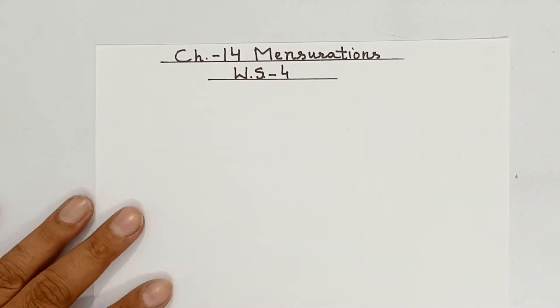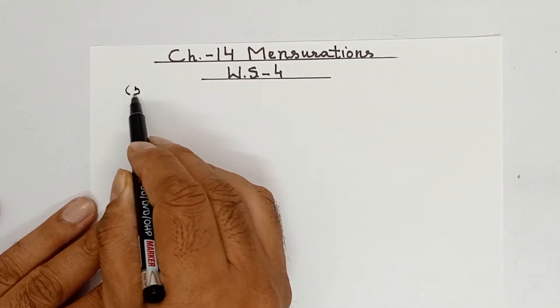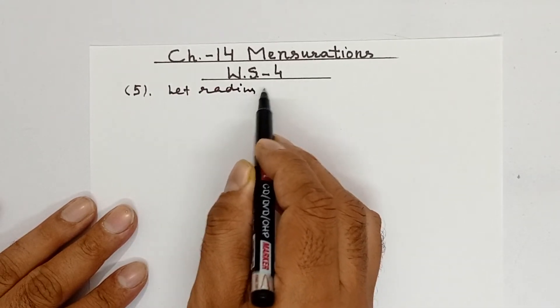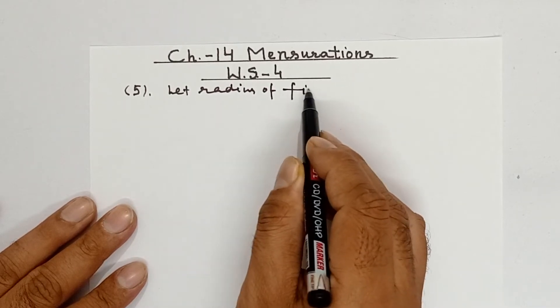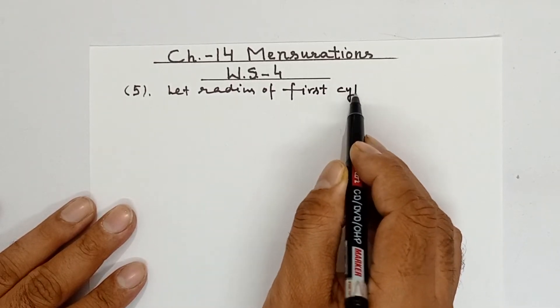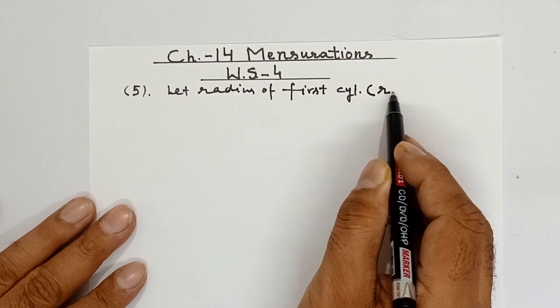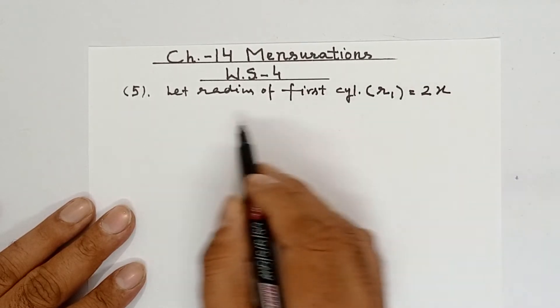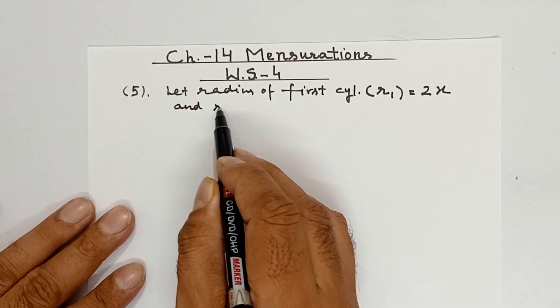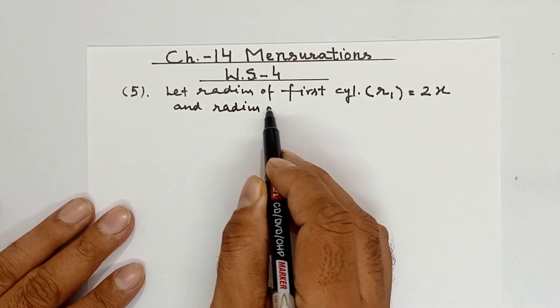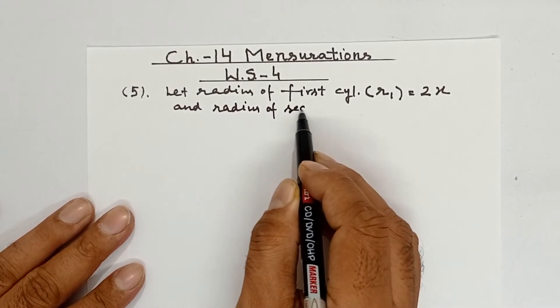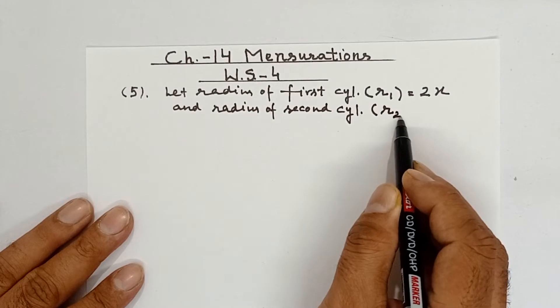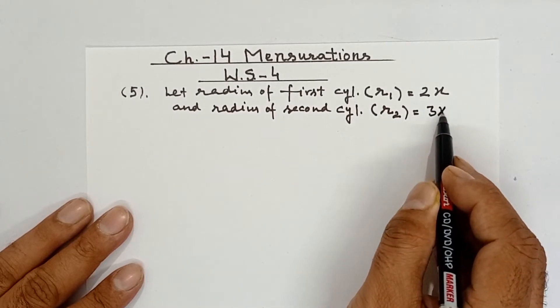Let's start the solution, question number 5. Let radius of first cylinder be denoted by R₁, and as the ratio is 2:3, it will be 2x. And radius of second cylinder, denoted by R₂, that will be 3x. So now 2:3.